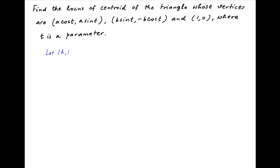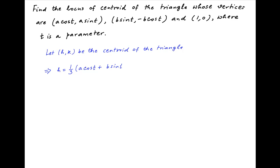Let's assume that the coordinates of the centroid of the given triangle are h and k. Therefore, h is equal to the sum of the abscissas of the three vertices divided by 3, which is equal to 1/3 times (a·cos(t) + b·sin(t) + 1). And similarly, k is equal to the sum of the ordinates of the three vertices divided by 3, which is equal to 1/3 times (a·sin(t) − b·cos(t) + 0).